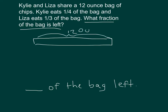One thing to note: it's not asking how many ounces are left, but rather the fraction of the bag that's left. We still figure it out the same way — one quarter of the bag is what Kylie eats, so we label that section K for Kylie, and this amount equals one fourth of the bag. Liza eats one third of the bag, labeled L, and this is one third of the bag.